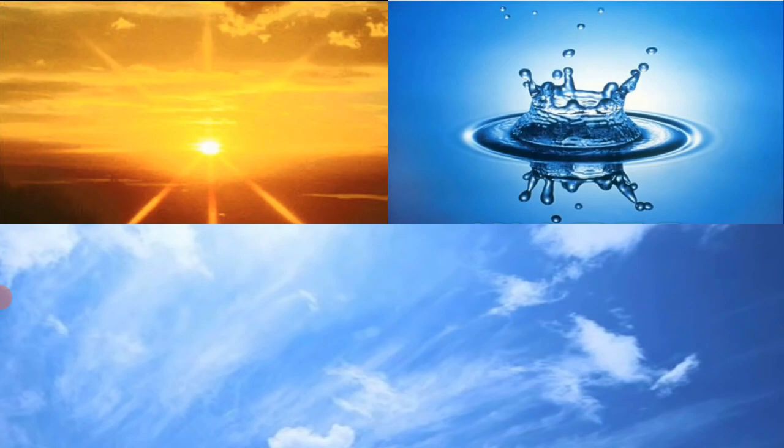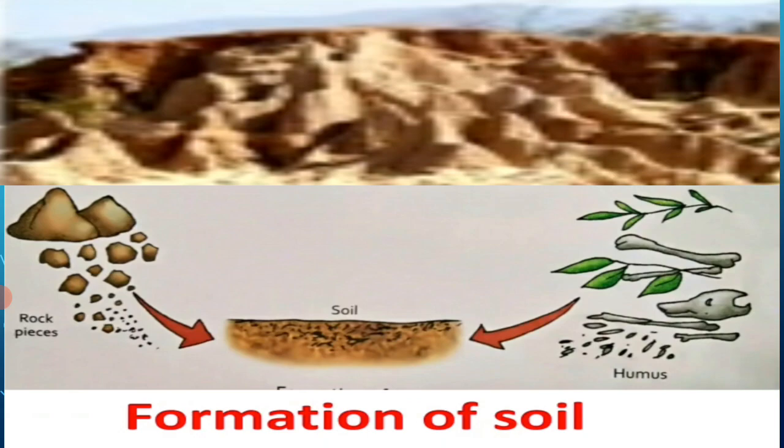Soil is formed by the action of sun, wind, and rain. Long ago, the earth was covered with huge rocks. These rocks broke up into smaller pieces over millions of years. These small pieces broke down further, and finally these tiny particles formed soil.